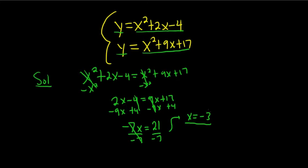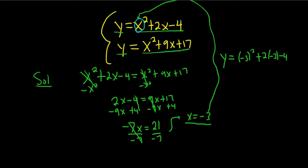To find the y-coordinate, we just have to take this and plug it back into any of these. I'll use the first one. So y equals negative 3 squared plus 2 times negative 3 minus 4. We're just putting negative 3 everywhere you see an x.